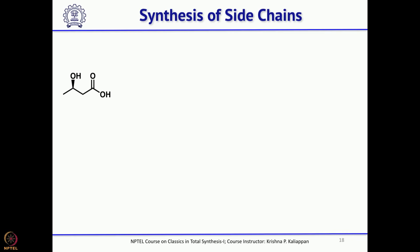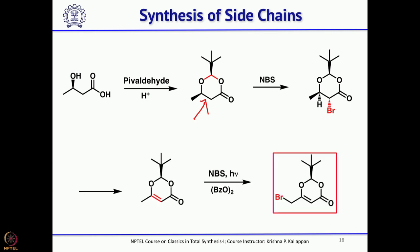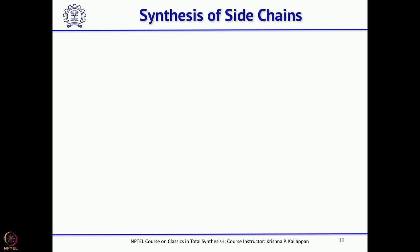He started with beta-hydroxycarboxylic acid. Upon treatment with pivalaldehyde in the presence of acid, this gave the protected compound. To introduce a double bond, first bromination followed by elimination gave the double bond, retaining one stereo center. Then allylic bromination was carried out with NBS under photochemical conditions, and one side chain is already prepared.